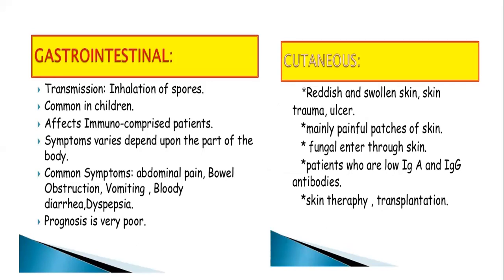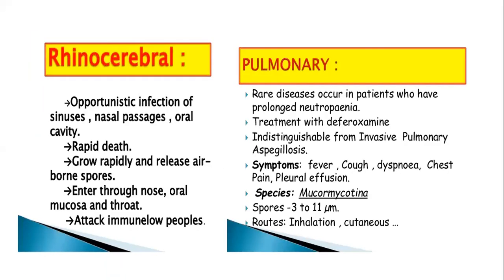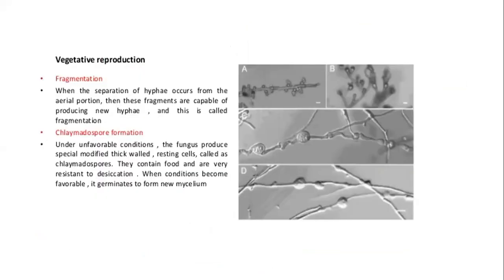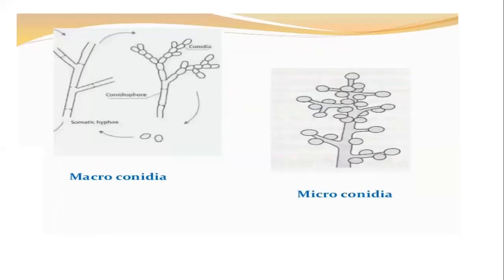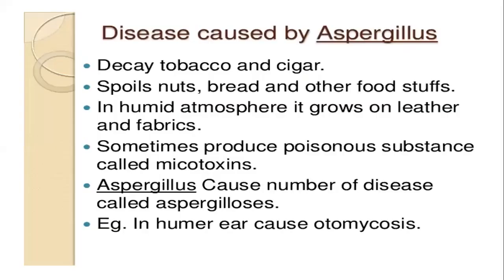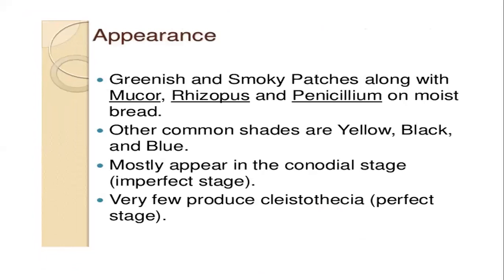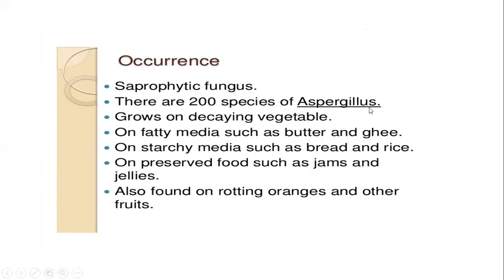To summarize, we talked about Mucor, Rhizopus, Neurospora, and Aspergillus — these are the four contaminants, covering their morphology, mode of contamination, and reproduction. With this we have ended unit 2 of the certificate course. I hope you all enjoyed the session, and from Monday onwards you will be dealing with unit 3.